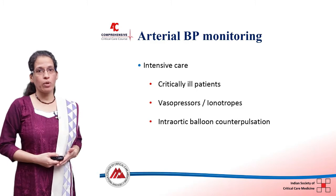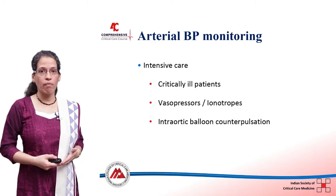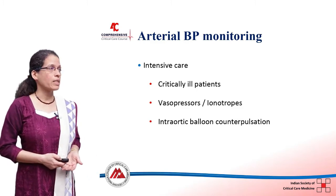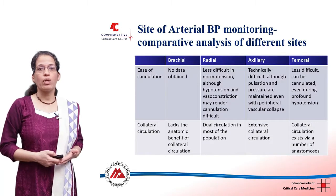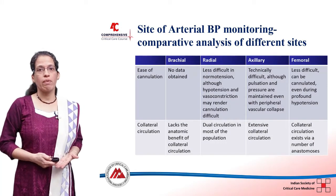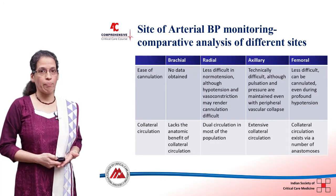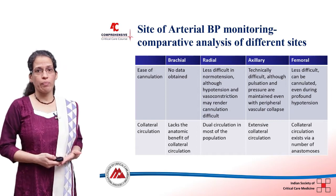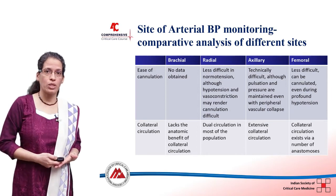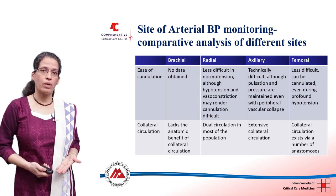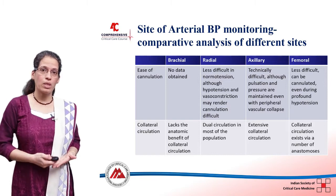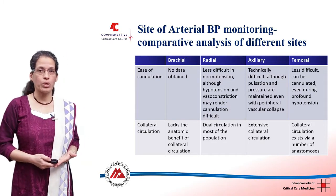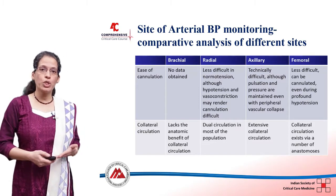We use arterial pressure monitoring very frequently and routinely in ICUs. The various sites for arterial pressure monitoring include: in the upper limb — the radial artery, brachial artery, and axillary artery; in the lower limb — the dorsalis pedis artery, the posterior tibial artery, and the femoral artery. Each artery has its own pros and cons when used for monitoring purposes.